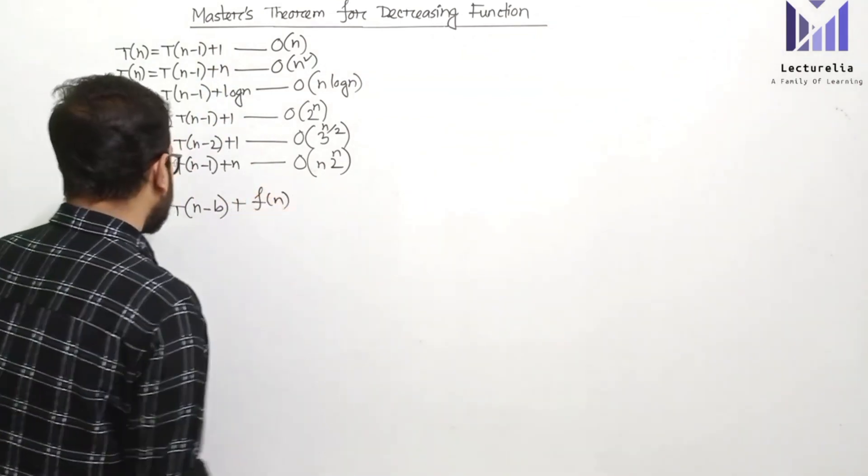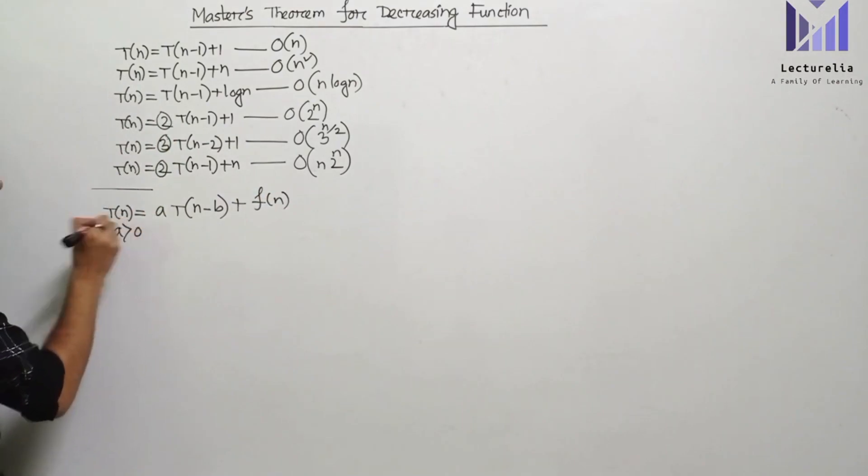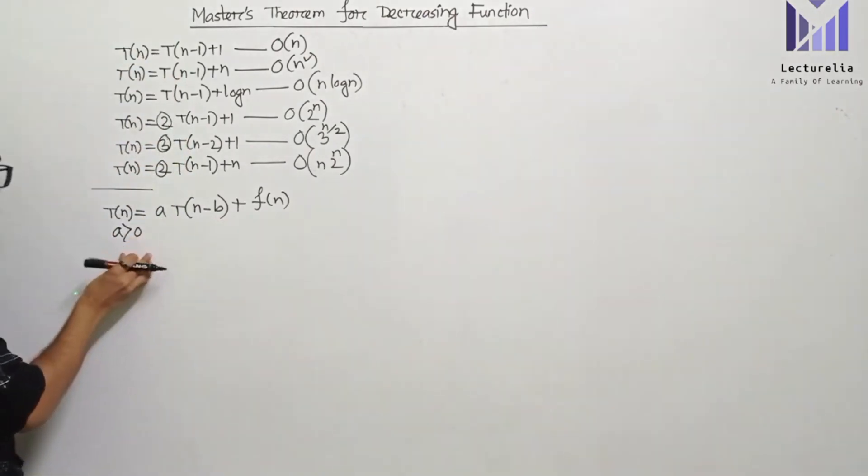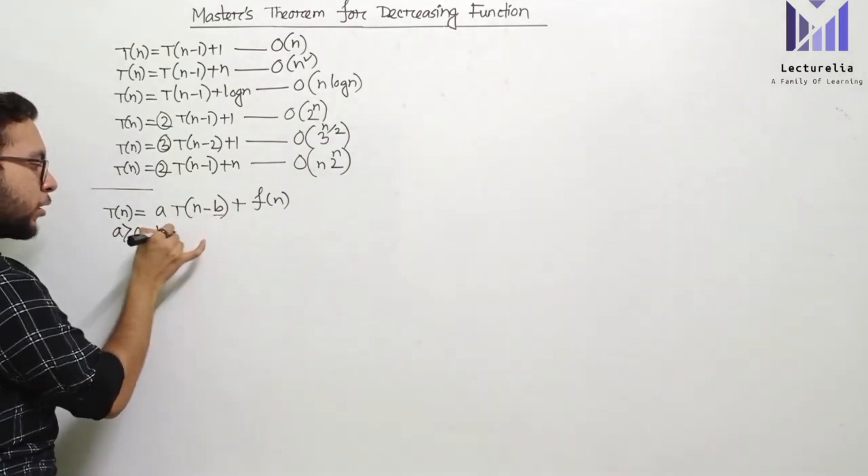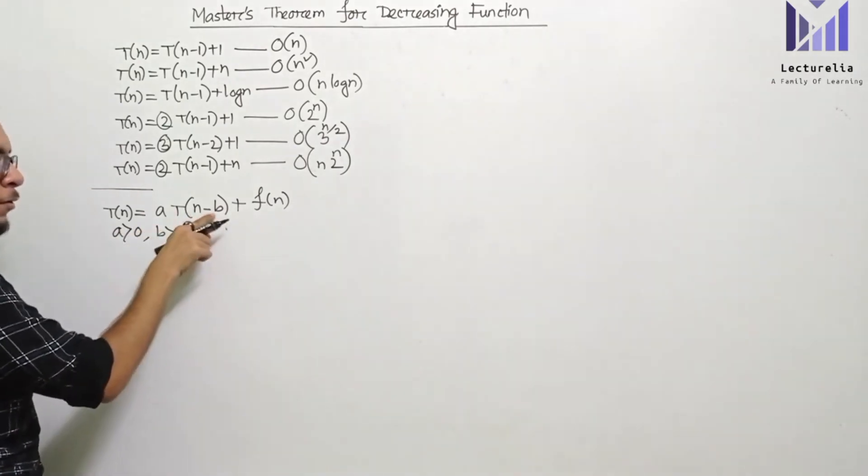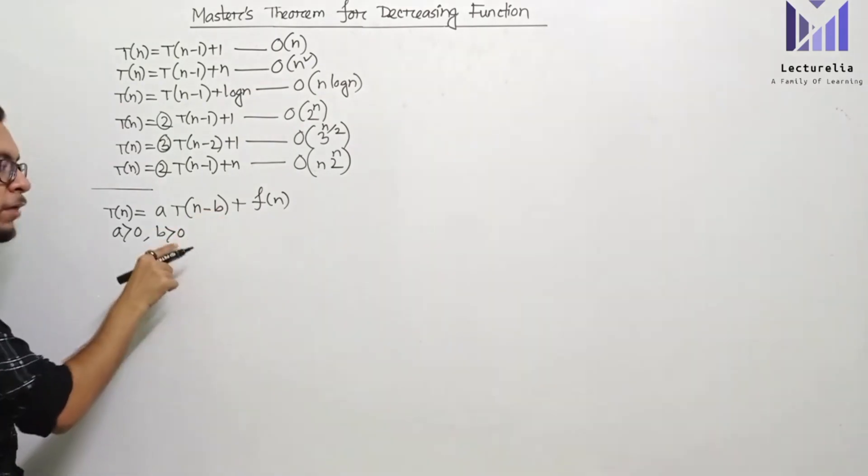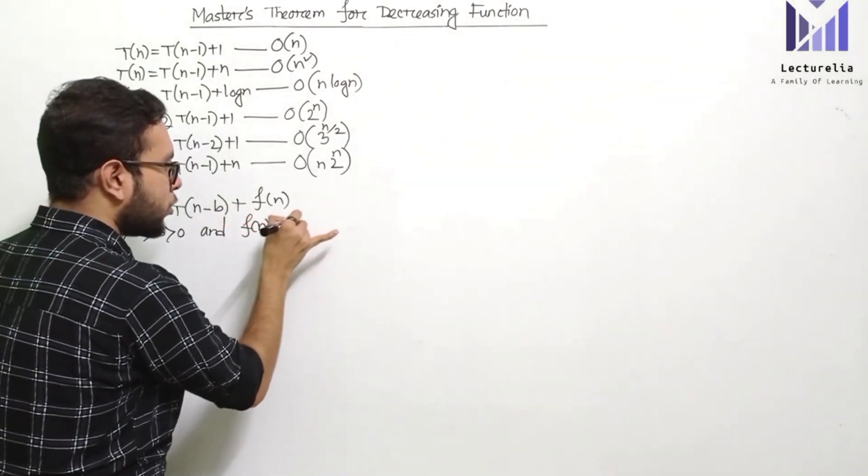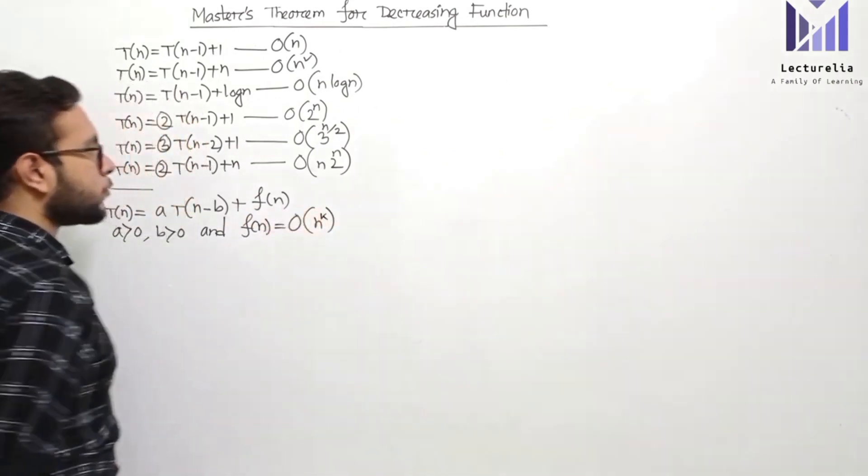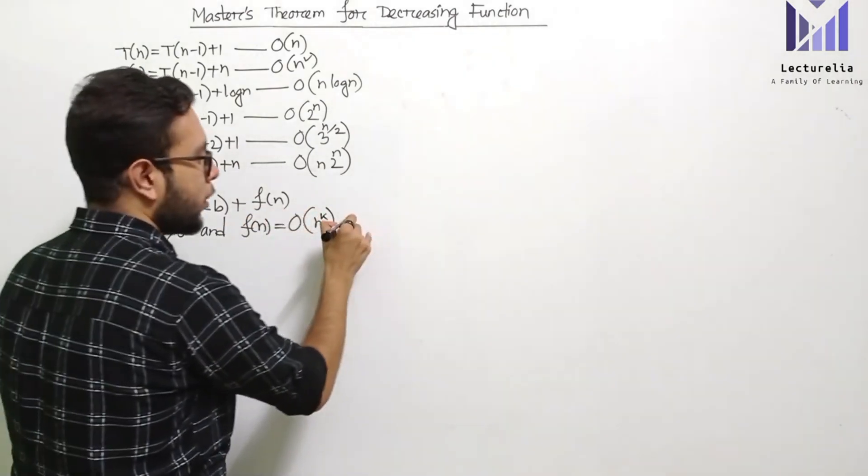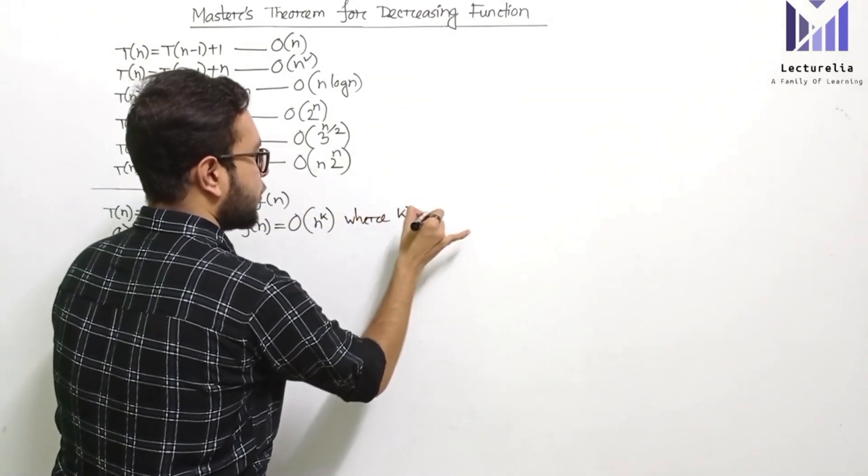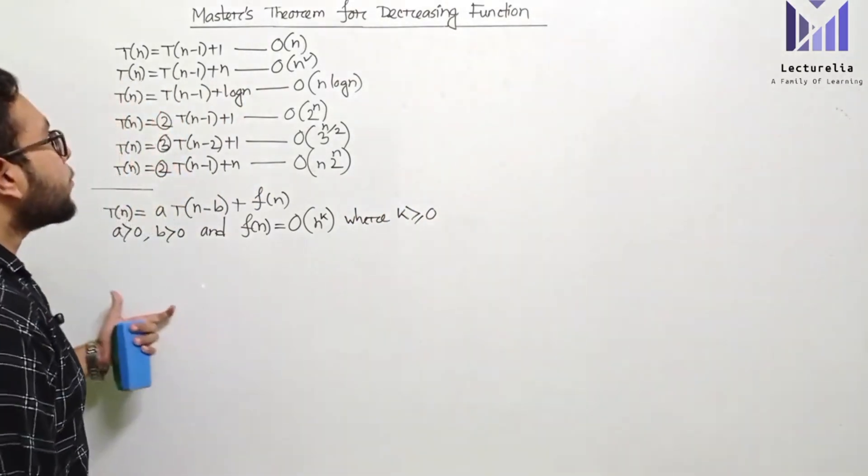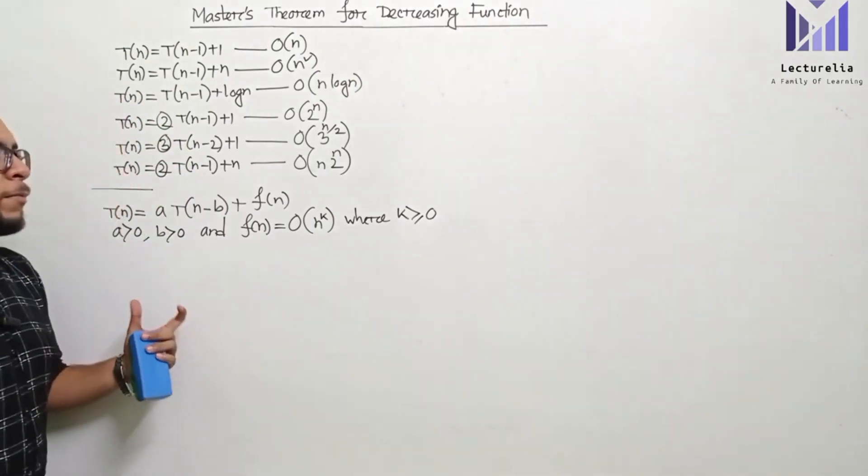If you need to show a, you can achieve a value. If a is zero, we take another approach. When f(n) = order of n to the power k, we generalize the form. This is the Master's Theorem for decreasing functions, which we'll discuss in today's video.